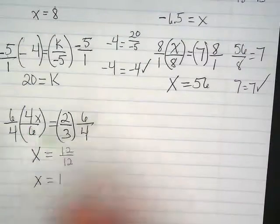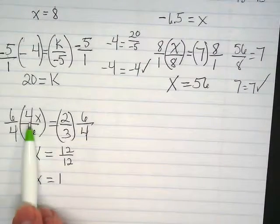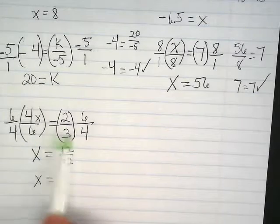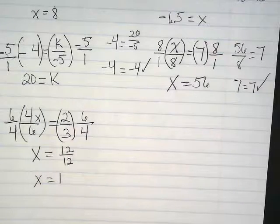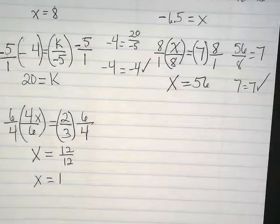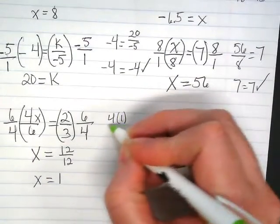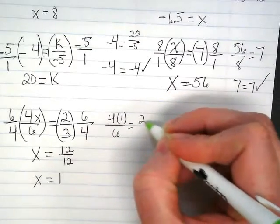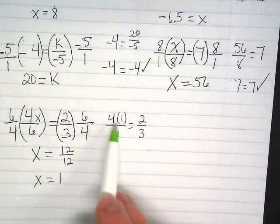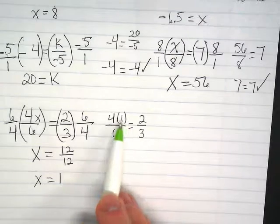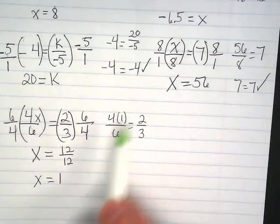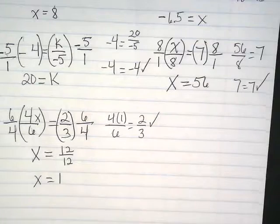And if you go back and look at the original problem, these are equivalent fractions, which kind of gives you a sense of how that worked out. To check it, I would just put a 1 in where that x originally was. And since 4 times 1 is 4, and 4 and 6 can be reduced to 2 over 3, this checks.